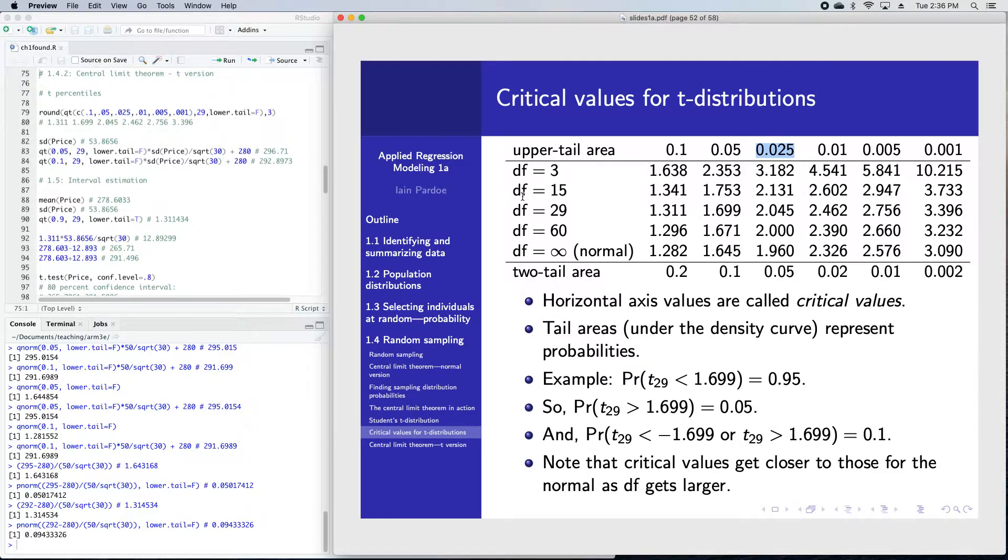You can see the idea that I mentioned in the last slide. When we have a smaller degrees of freedom, smaller sample, our tails are getting fatter. What that means is we've got more probability out in the tail.